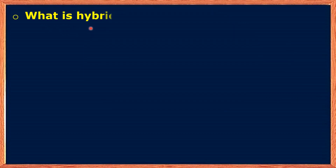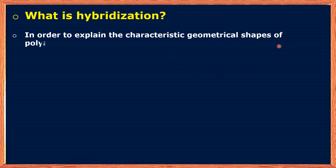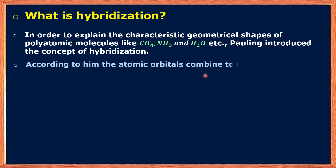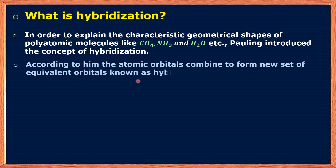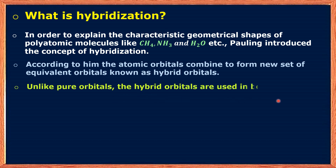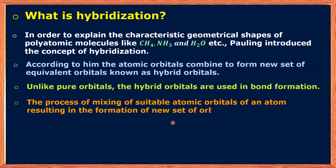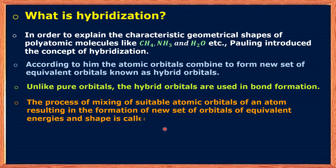What is hybridization? In order to explain the characteristic geometrical shapes of polyatomic molecules like CH4, NH3, and H2O, Pauling introduced the concept of hybridization. According to him, the atomic orbitals combine to form a new set of equivalent orbitals known as hybrid orbitals. Unlike pure orbitals, the hybrid orbitals are used in bond formation. We can define hybridization as the process of mixing of suitable atomic orbitals of an atom, resulting in the formation of a new set of orbitals of equivalent energies and shape.